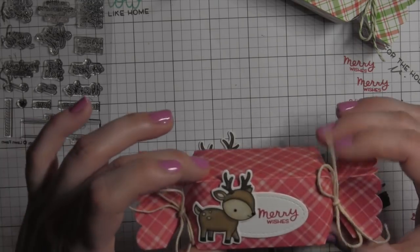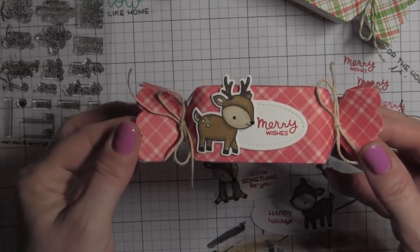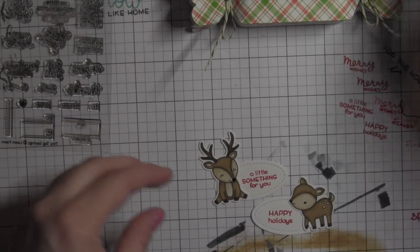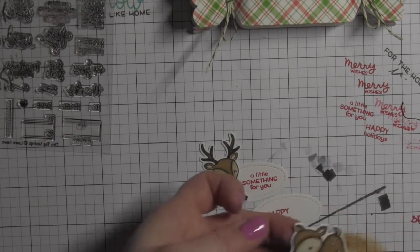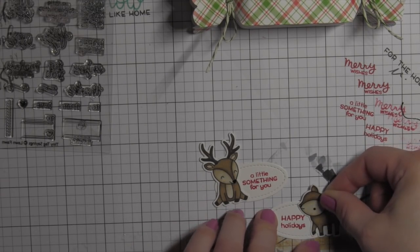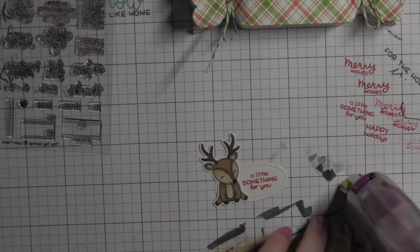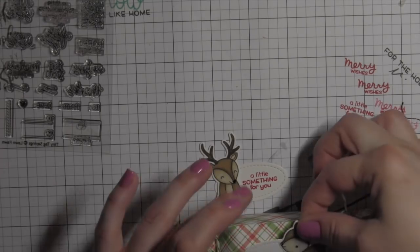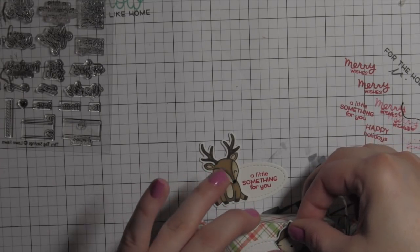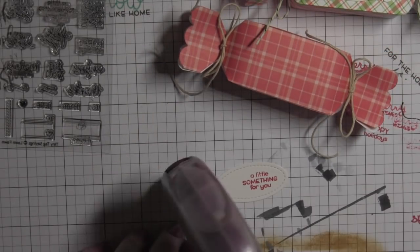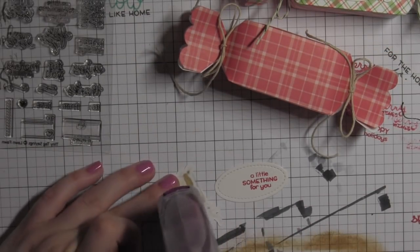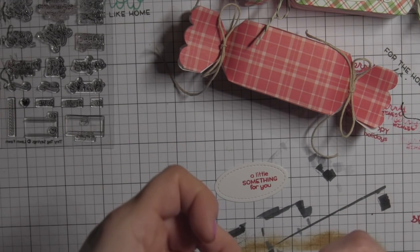Get that deer placed. And there is what they're going to look like. So cute and fun. I used deer, but you could use any of the Lawn Fawn critters or images. I think the penguins would be really cute. All kinds of fun critters that would just make adorable candy box labels there for little gift boxes or decorations.